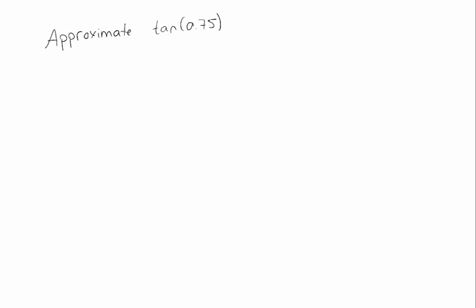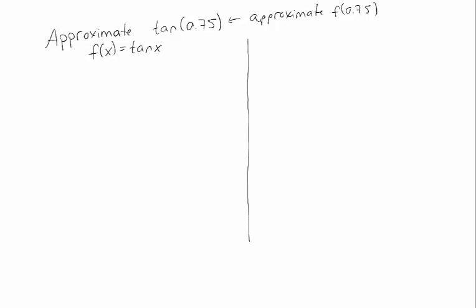Often we won't give you the function — we'll just ask you to calculate some value. Suppose I told you to approximate the tangent of 0.75 radians. No one knows exactly what this equals. If we say f of x is the tangent of x, what we're asking is to approximate f of 0.75. We need a value where we can easily calculate the function and that's not too far from 0.75.